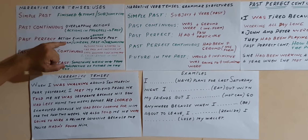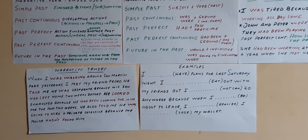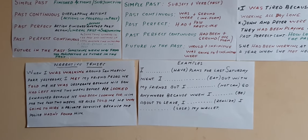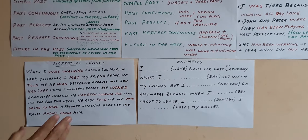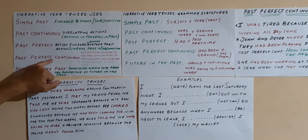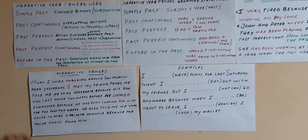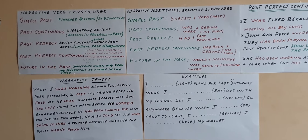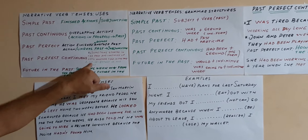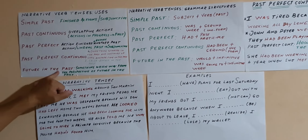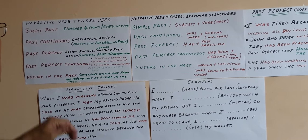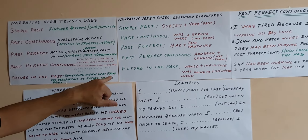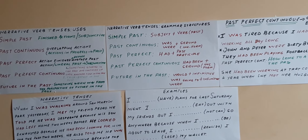Past perfect is an action finished before another action in the past. Or it can also be used for unreal past — that is to say, the subjunctive in the third type of conditional sentence. The past perfect continuous describes something that started in the past and continued up until another time in the past, or is used for cause-effect in the past. And the future in the past can be expressed with 'was' or 'were going to,' or something which was from the perspective of future in the past.